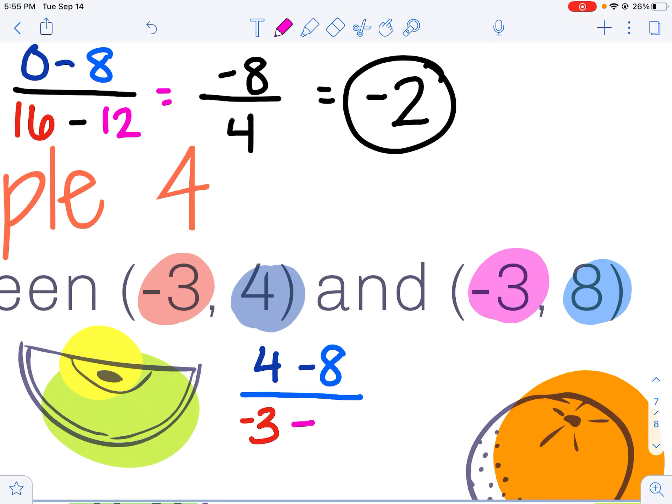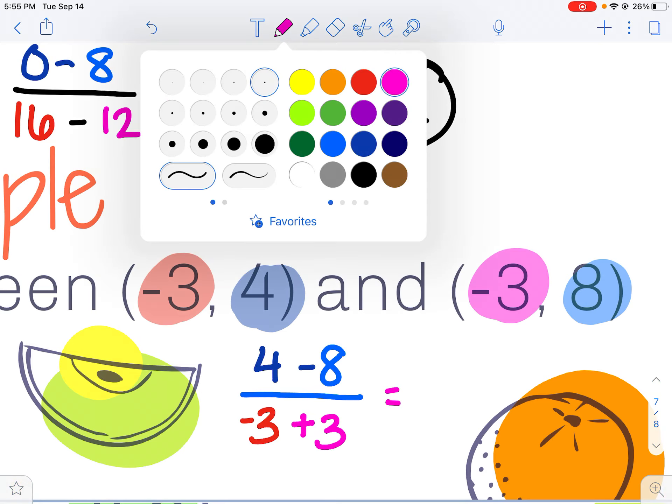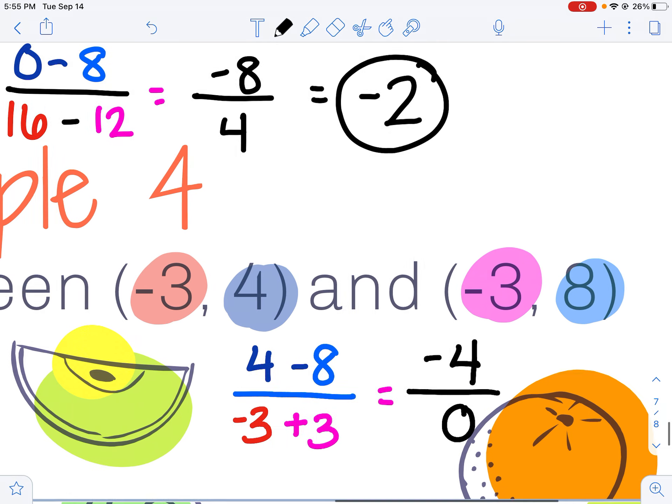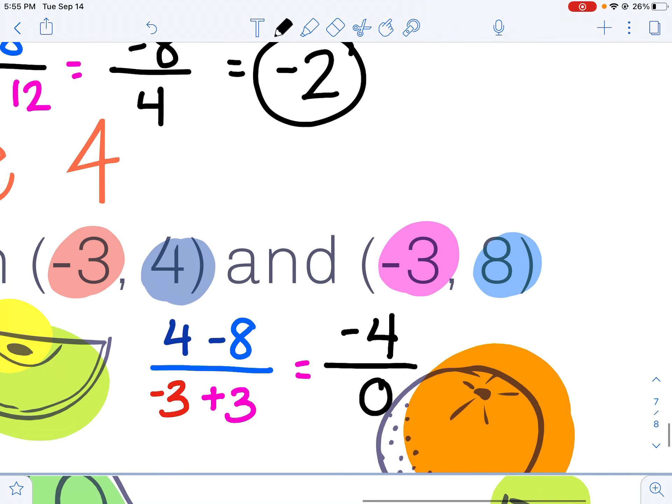Taking my first x value minus my second x value—minus a negative becomes a plus. And now I'm just going to do a little bit of math. 4 minus 8 is negative 4. Negative 3 plus 3 is 0. We don't know what happens when we divide by 0, so this slope is undefined.